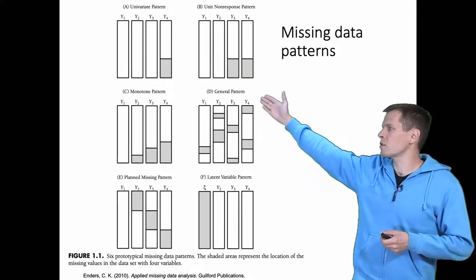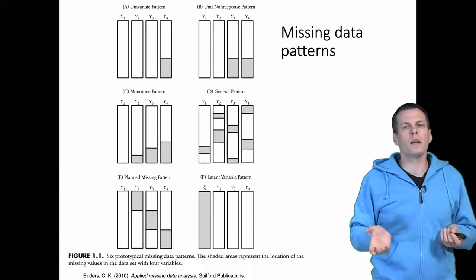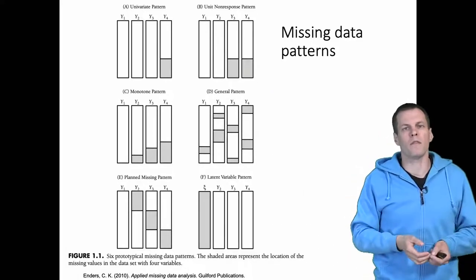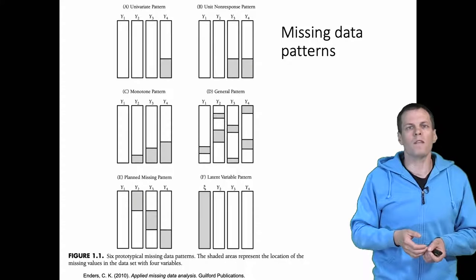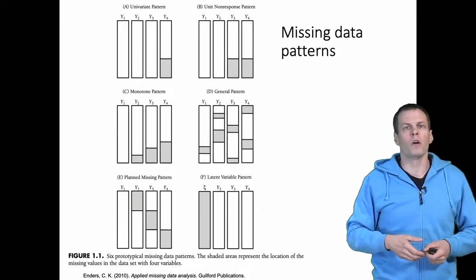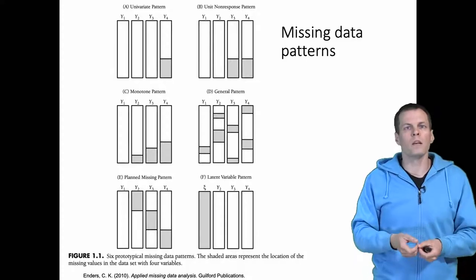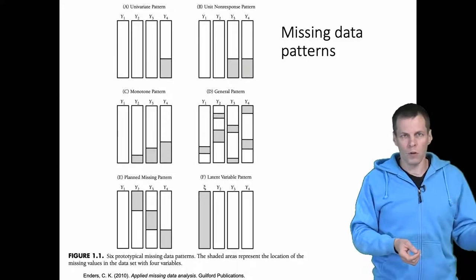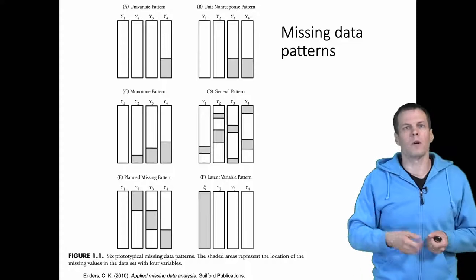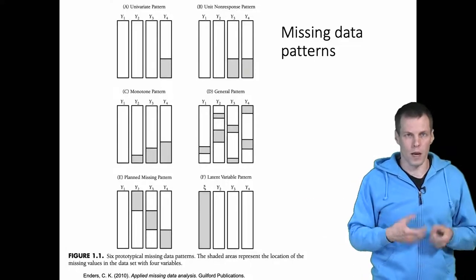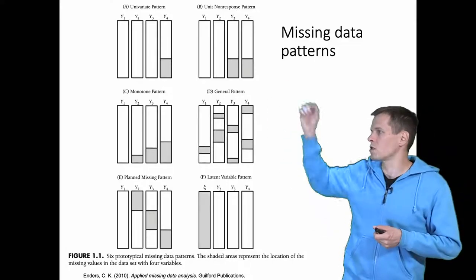Then there is unit non-response pattern, and this would be for example the case if you have a survey dataset and you have some secondary data from your sampling frame. Only some people decide to respond to your survey. You have the data from the frame for those people or companies but not the data from the actual survey, and this is the unit non-response pattern.